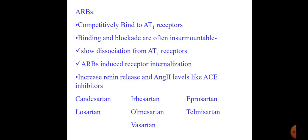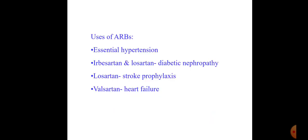ARBs competitively bind to AT1 receptors with slow dissociation, and induce receptor internalization — so binding and blockade are often insurmountable. ARBs increase renin release and angiotensin 2 levels because the short-loop negative feedback via AT1 is blocked; however, since AT1 activity is also blocked, this does not have much net clinical effect. Examples: losartan, telmisartan, valsartan. Uses are similar to ACE inhibitors — essential hypertension and diabetic nephropathy. Losartan has additional use in stroke prophylaxis, and valsartan is specially used in heart failure.